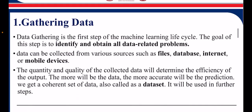Step 2: Gathering Data. Data gathering is the first step of the Machine Learning Life Cycle. The goal is to identify and obtain all data related to the problem. Data can be collected from various sources like files, databases, internet, or mobile devices. The quantity and quality of collected data will determine the efficiency of the output—the more data, the more accurate the prediction.